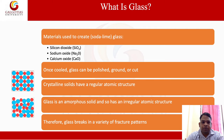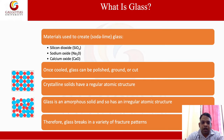What is glass? Materials used to create glass. There is some composition to look at: silicon dioxide, sodium oxide, and calcium oxide. These are the mixture for the preparation of glass. Once cooled, glass can be polished, ground or cut. Crystallized solids have a regular atomic structure. Glass is an amorphous solid and brittle, and so has an irregular atomic structure. Therefore, glass breaks in a variety of fracture patterns.